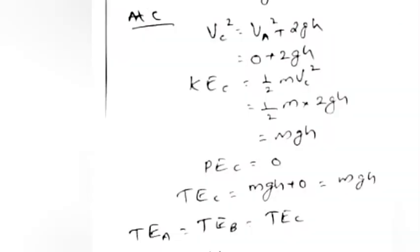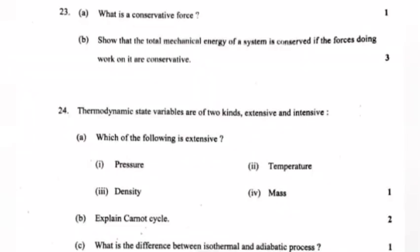At point C: v_C squared equals v_A squared plus 2gh equals 0 plus 2gh. KE_C equals half m times 2gh equals mgh. PE_C equals 0. TE_C equals mgh plus 0 equals mgh. Therefore TE_A equals TE_B equals TE_C, showing energy is conserved.